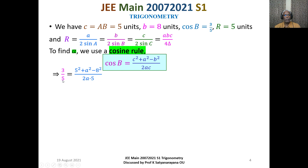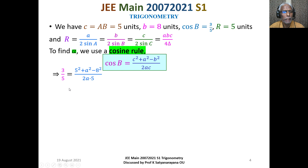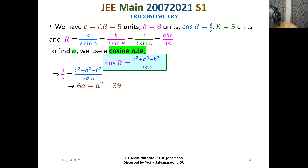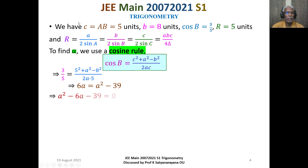Cancelling the 5s, and moving 2a to the other side, we get 6a equals a squared minus 39. Thus we have the quadratic equation: a squared minus 6a minus 39 equals 0.